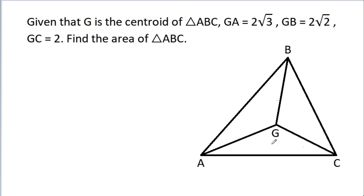In this video, we have been given that G is the centroid of triangle ABC, and GA is 2 times square root of 3, GB is 2 times square root of 2, and GC is 2. Then we have to find the area of triangle ABC.